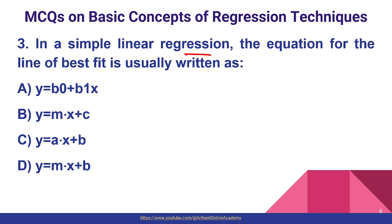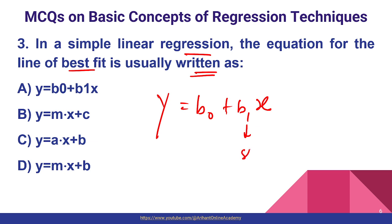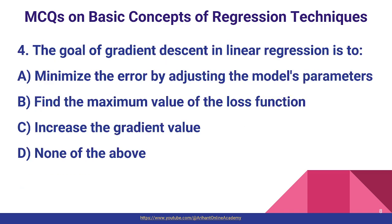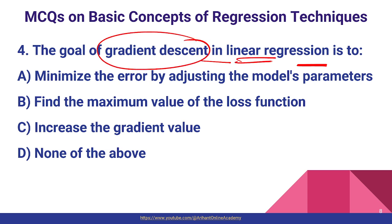Question number three: in simple linear regression, the equation for the line of best fit is written as y = b0 + b1*x, just like y = mx + c, where b1 works as the slope and b0 works as the intercept. So option A is the correct answer. Question number four: the goal of gradient descent in linear regression is to minimize the error by adjusting the model's parameters, so option A is the correct answer.